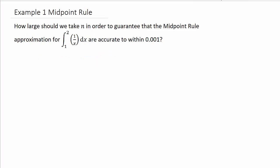Alright, so let's take a look at example 1. It says, how large should we take n in order to guarantee that the midpoint rule approximation for the integral 1 over x from 1 to 2 is accurate to within 0.001.